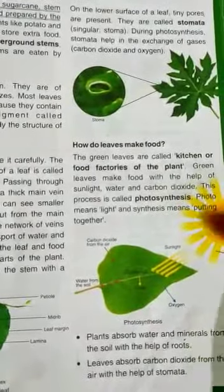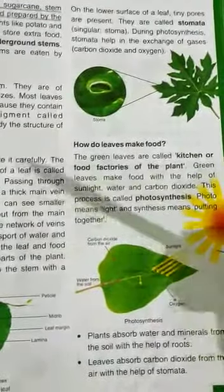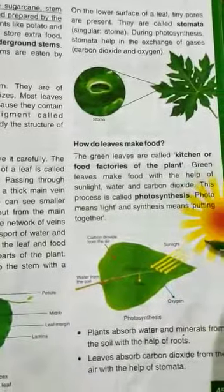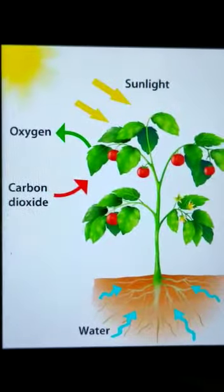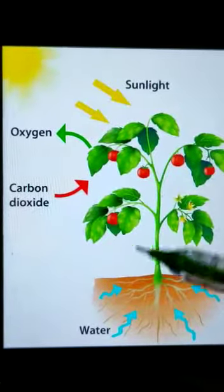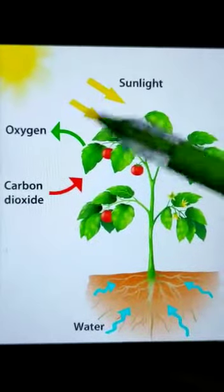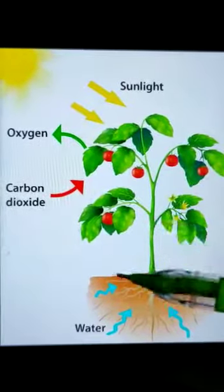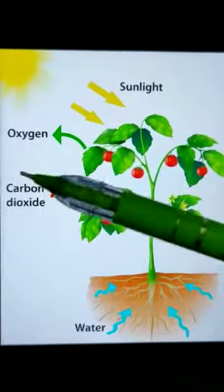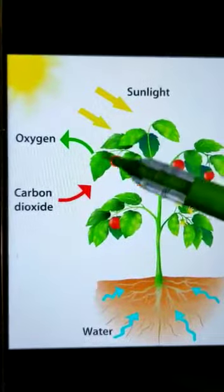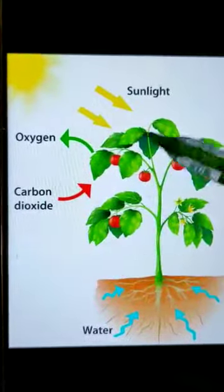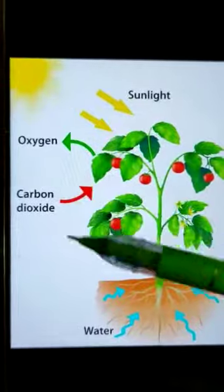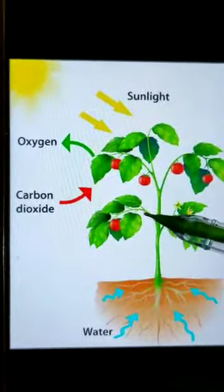The green leaves are called the kitchen or food factory of the plant. Green leaves make food with the help of sunlight, water and carbon dioxide. This process is called photosynthesis.